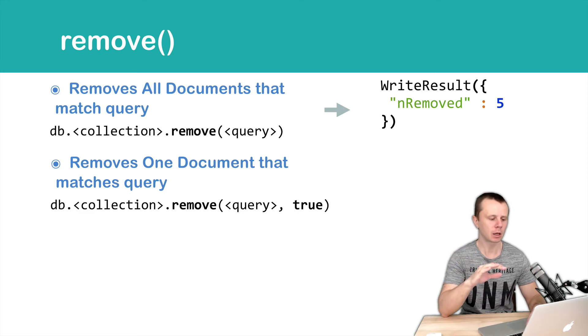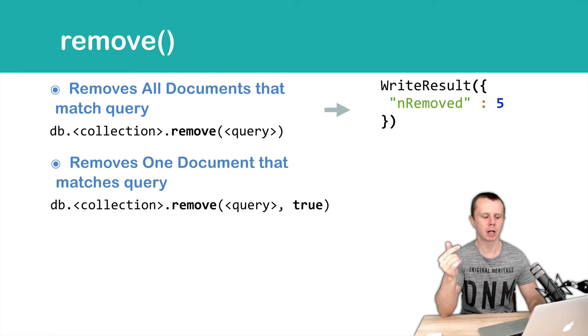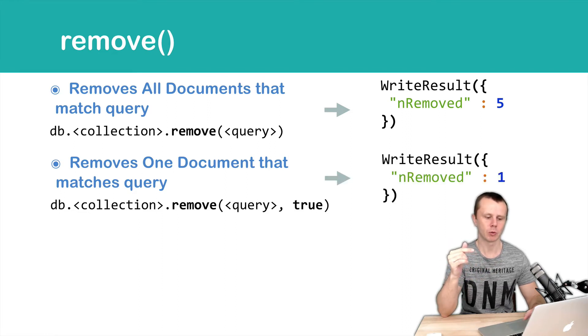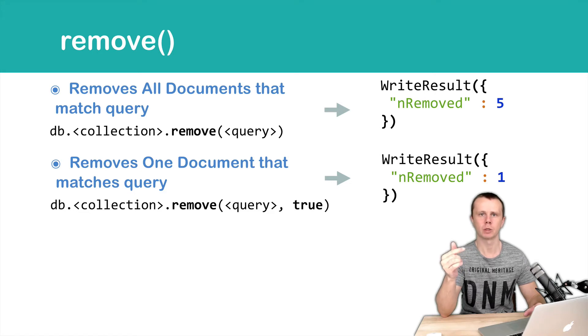Exactly like in this example. And as a result, if the document was removed, you will get a WriteResult with the number 1.